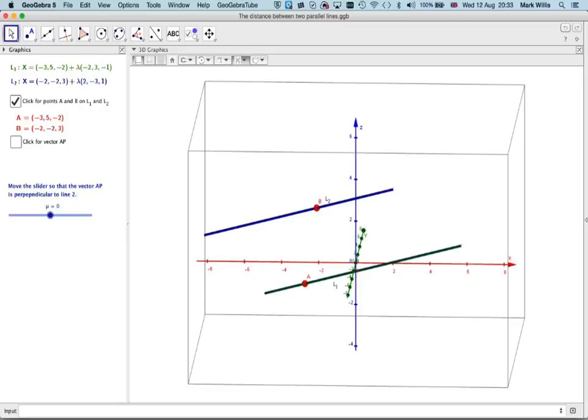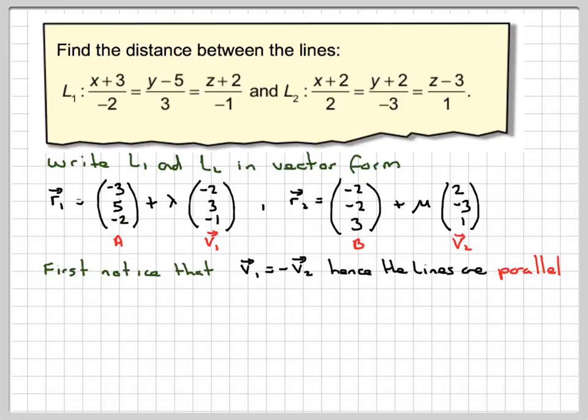What we need to do is create a vector. We're going to call this vector A to P, where P is to some general point on the line. Then we're going to make the vector AP at right angles to L2 and L1. That will be the shortest distance between the two lines when this forms a perpendicular between the two lines.